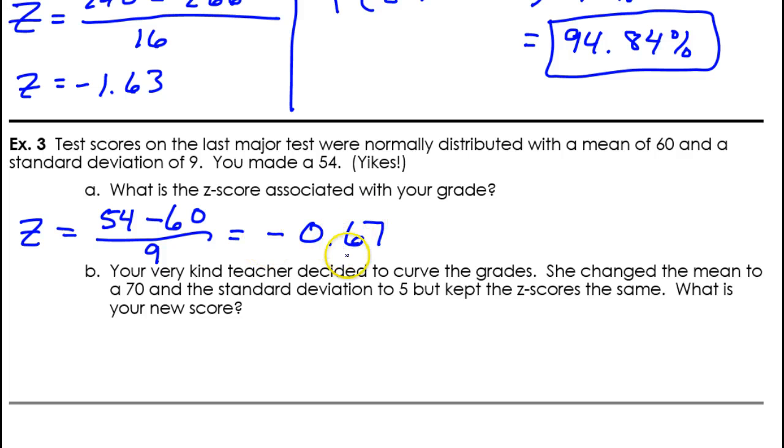So, if the Z score is going to be negative 0.67, then that goes here in the formula. Okay. We're trying to figure out what your new score would be. So, we'll call that X. Okay. And, the mean is now 70. And, the new standard deviation is 5. So, this is a way of curving tests. So, it's just a matter of solving this. And, that would tell you what it's going to be. So, you would multiply everything by 5.